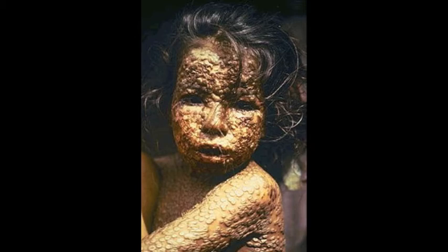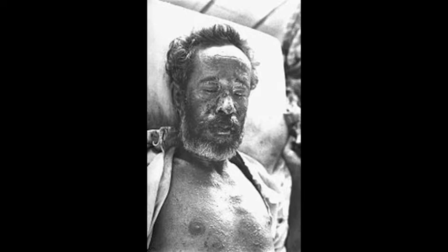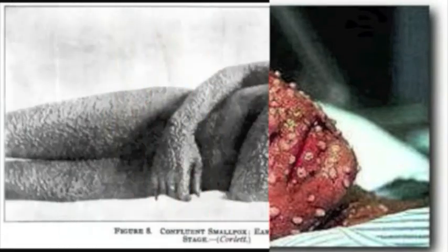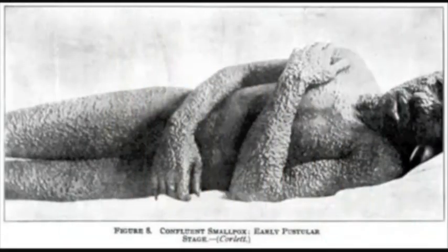Smallpox is known as variola because one of the symptoms of smallpox are tiny pimples, known as pustules, which form all over a person's body. Beginning symptoms of smallpox occur only after the incubation period of two weeks. Beginning symptoms include high fever, backache, headache, and nausea.